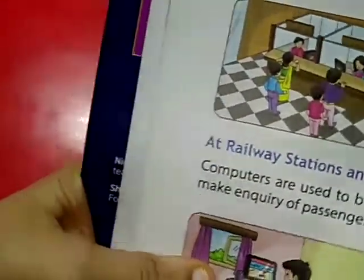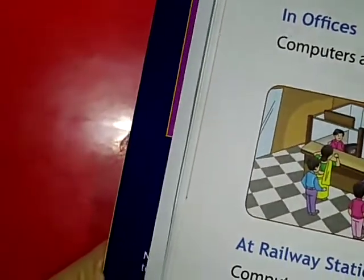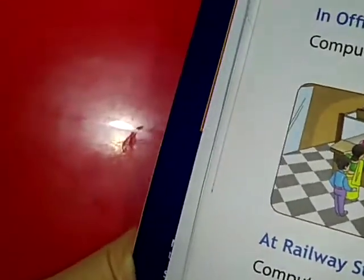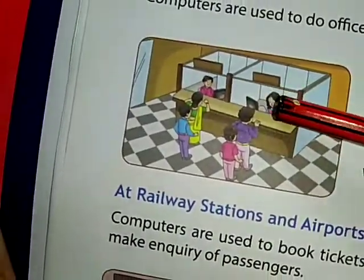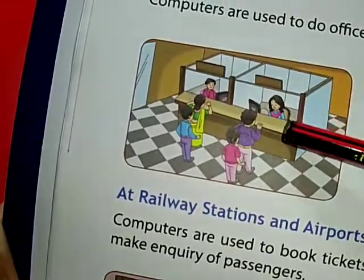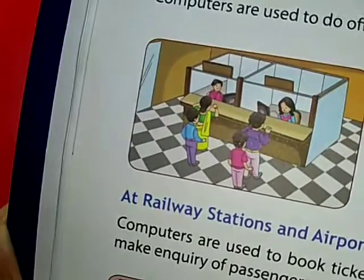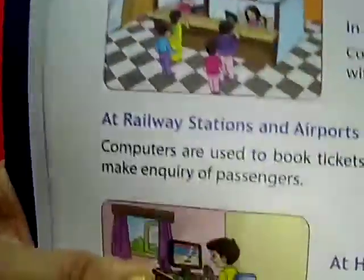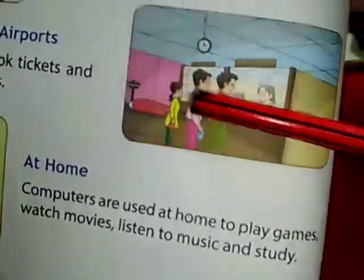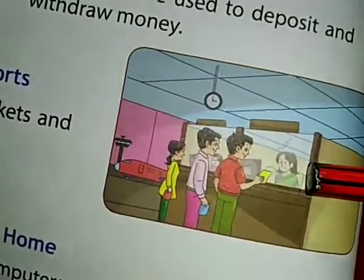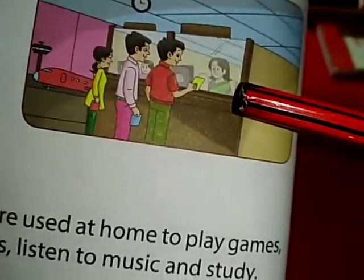In a bank, computers are used to deposit and withdraw money. People are withdrawing or depositing cash in the bank. At a railway station, computers are used to book tickets and make inquiries about passengers.